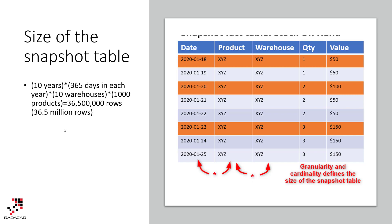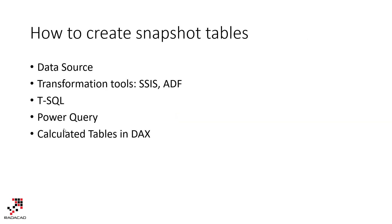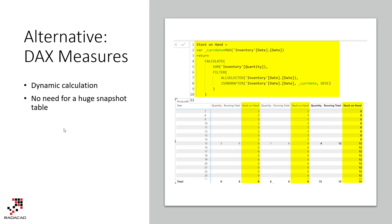There are different ways to build snapshot fact tables. You can build them in the data source using transformation tools such as SSIS, Azure Data Factory, Informatica, or other tools. If you're good at SQL scripting, you can use T-SQL stored procedures and views. In the world of Power BI, you can do this using Power Query, Dataflow, or DAX calculated tables. All of these methods are pre-calculated, meaning they impact the ETL process of your model, not the runtime performance of your report.